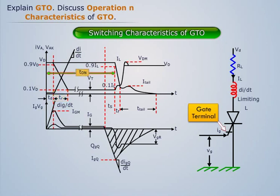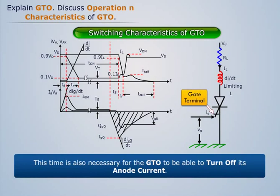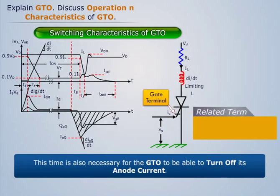A minimum on-time period T-on is required for anode current conduction in the GTO. This time is also necessary for the GTO to be able to turn off its anode current.